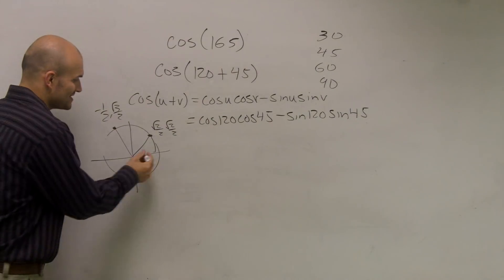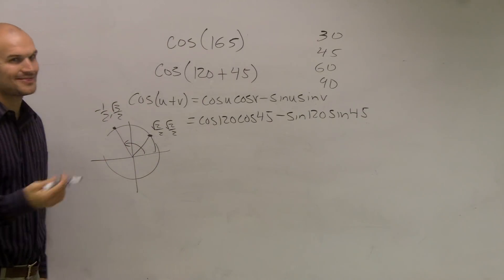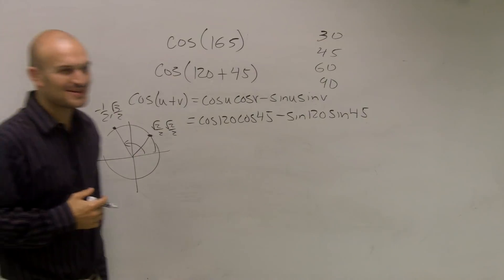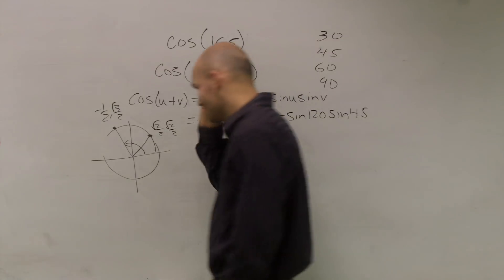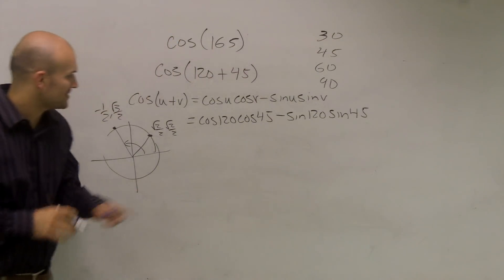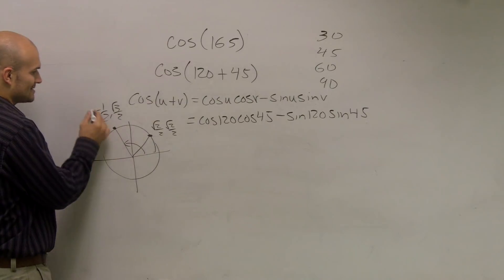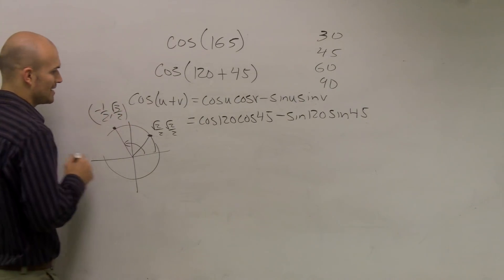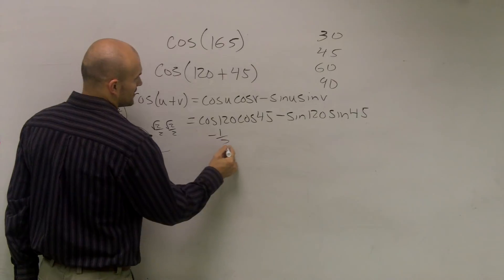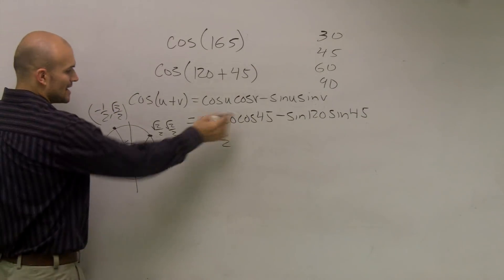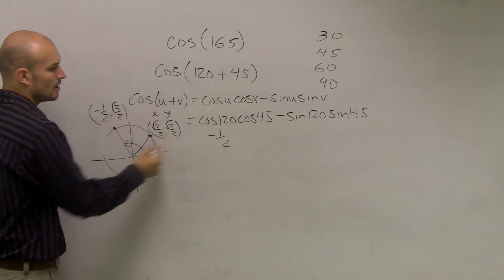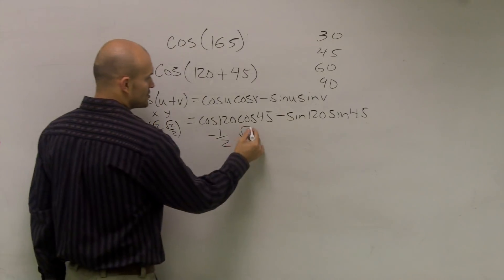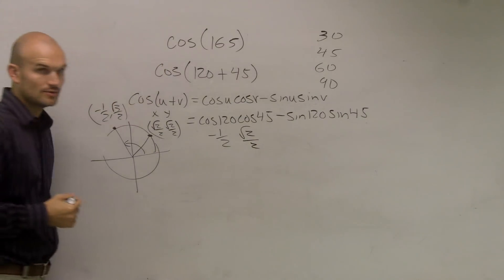So cosine of 120 degrees, thank you, is going to be this angle. Obviously 120 is not 30 from 180. So I'll slow down a little bit. The cosine of 120 is negative 1 half, radical 3 over 2. So it's going to be negative 1 half times the cosine of 45 degrees, which again is going to be your y coordinate of this point, which is radical 2 over 2.